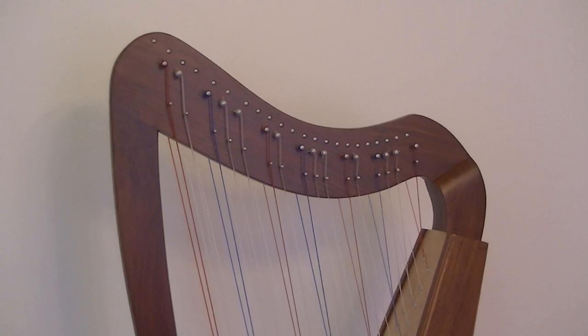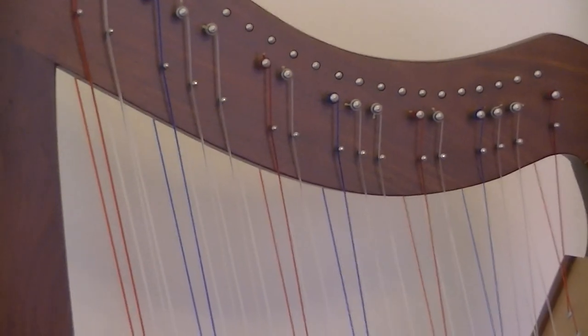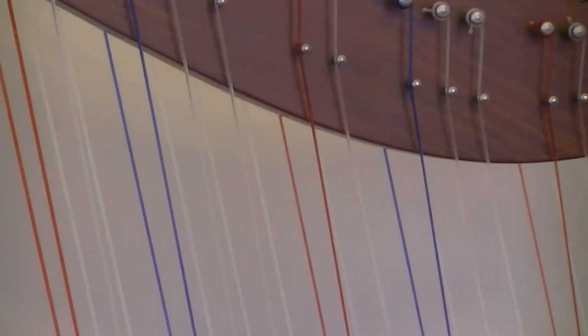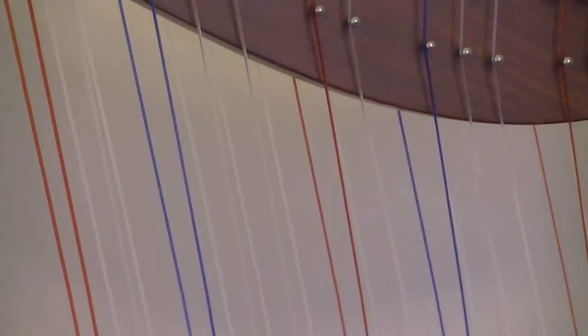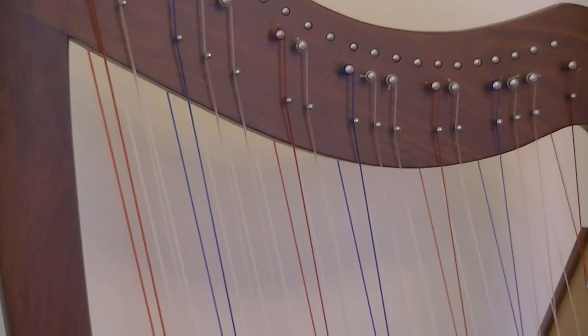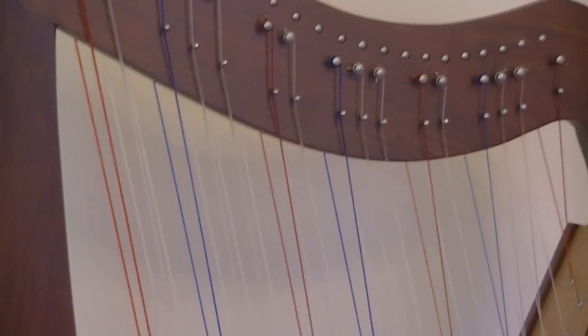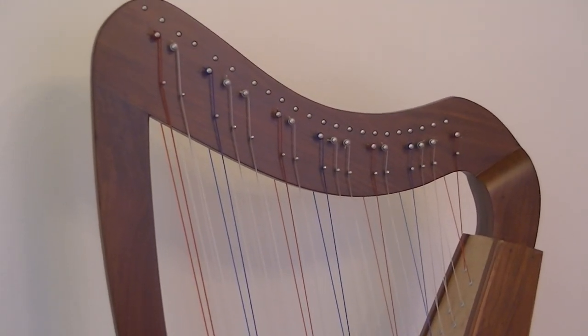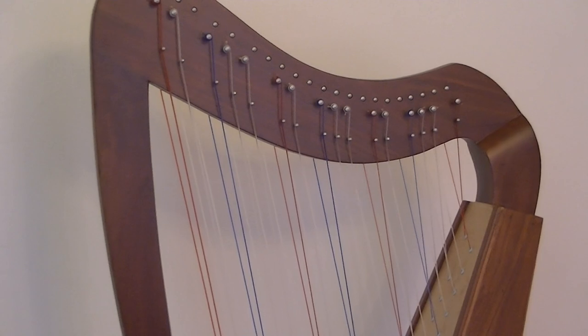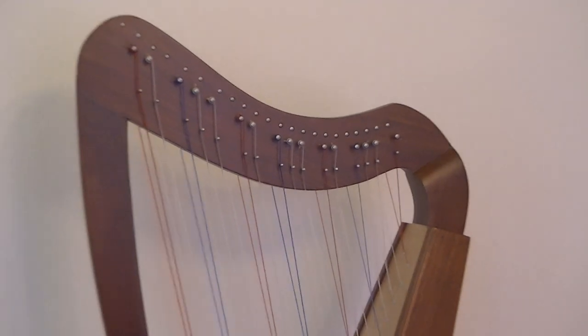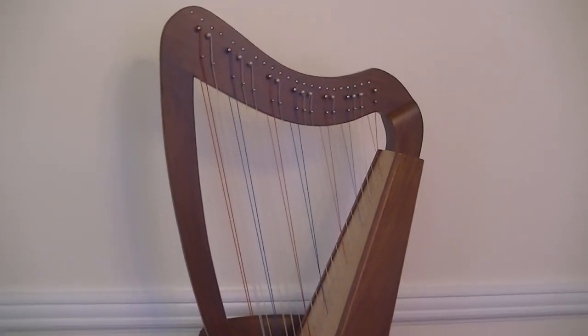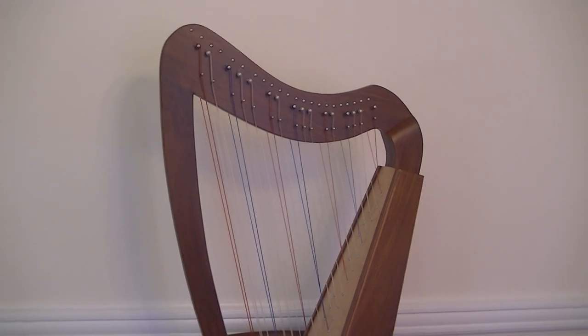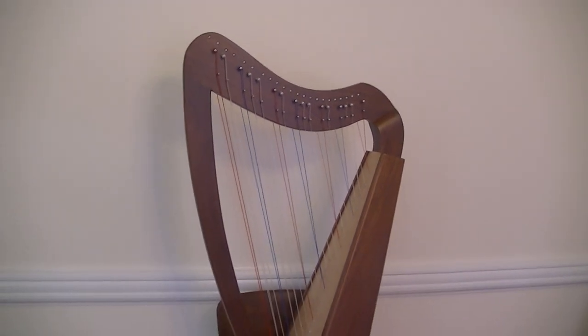This harp has all twelve notes of the octave, all the seven white notes and the five black notes. And just like on a piano, the black notes are on a separate row from the white notes. It sounds a little confusing, but when you look at it, it's actually a pretty ingenious system and I will show it to you.